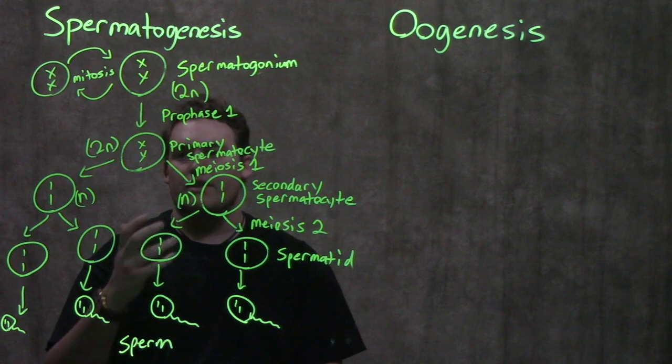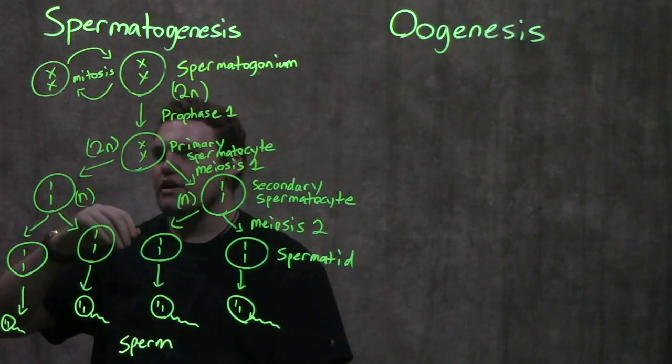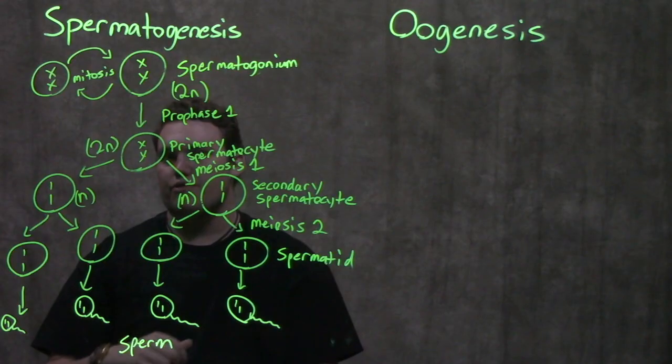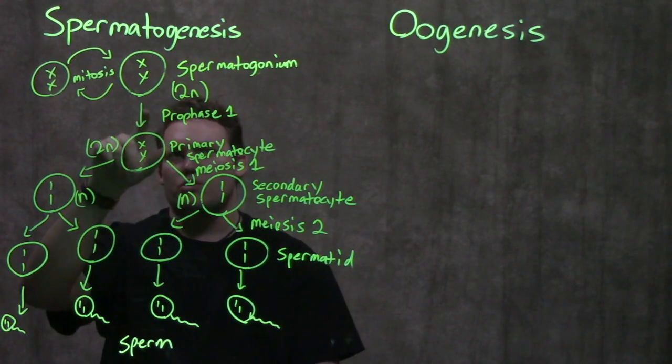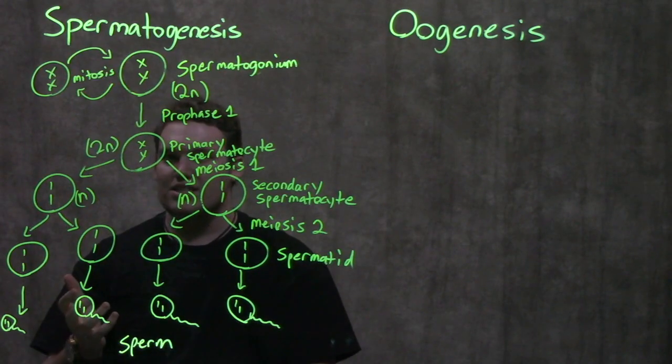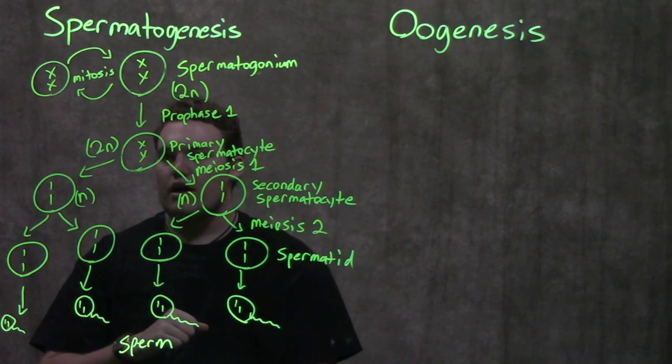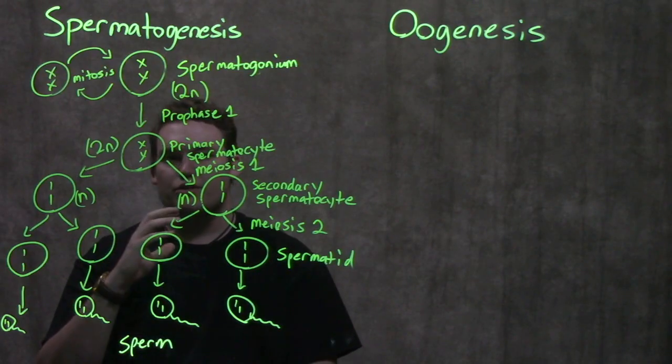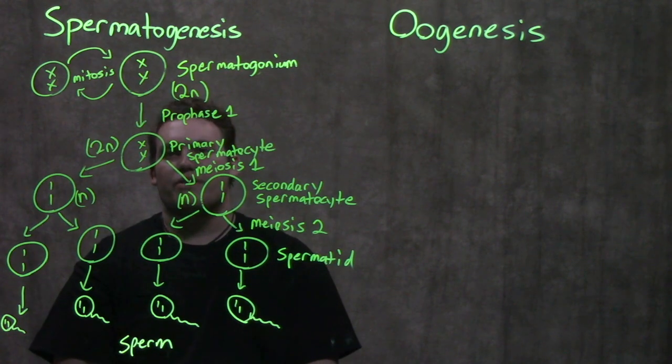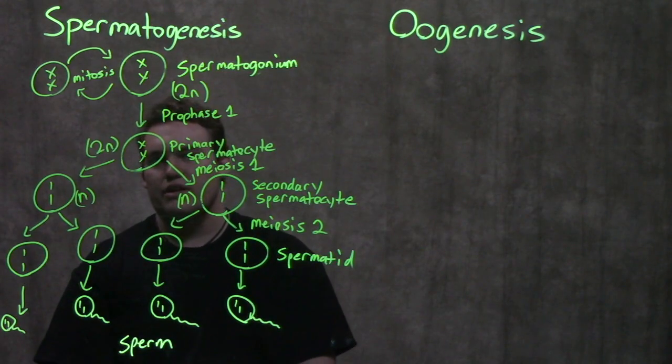What's important is that spermatogonium is what we start with. It's 2N and can mitotically divide to make more identical spermatogonium. Once it makes the decision to go into meiosis, it becomes a primary spermatocyte. Primary spermatocytes are still 2N—they haven't completed meiosis 1. When you finish meiosis 1, you become a secondary spermatocyte. That's important when we get to oogenesis, which we'll cover in the next video.